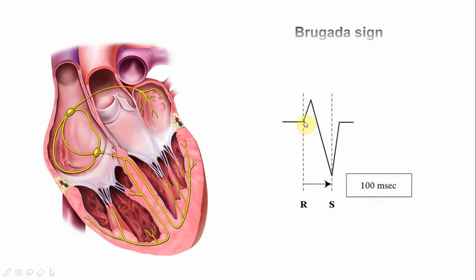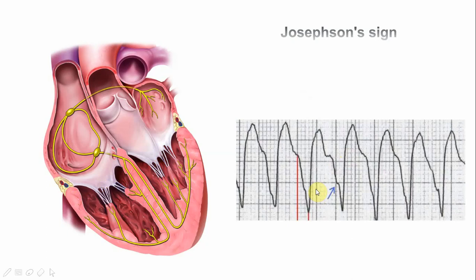Another important characteristic feature is the Brugada sign, which is part of the Brugada criteria. The Brugada sign is measured from the beginning of the R wave to the nadir of the S wave. If this distance is more than 2.5 small squares — which equals 100 milliseconds — this is a positive Brugada sign. In this particular ECG that distance is about 3 small squares, equaling 120 milliseconds.